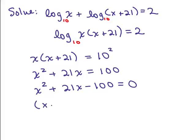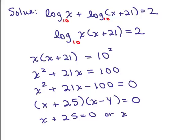So this is going to be x plus 25 times x minus 4 equals 0. So we set each factor equal to 0. So we get two possibilities, x can be negative 25 or x can be 4.